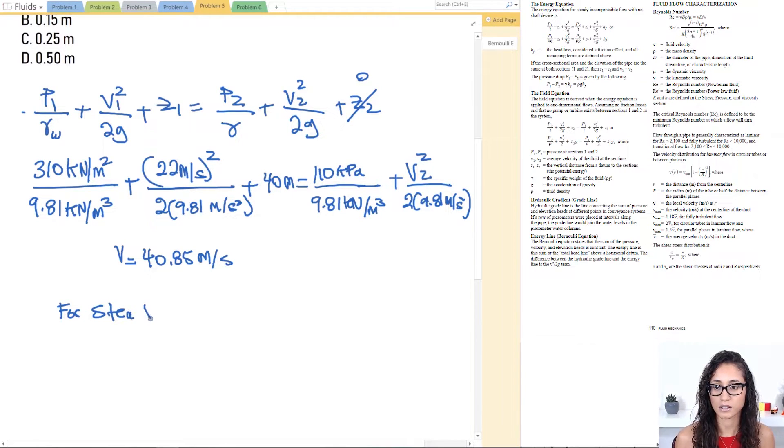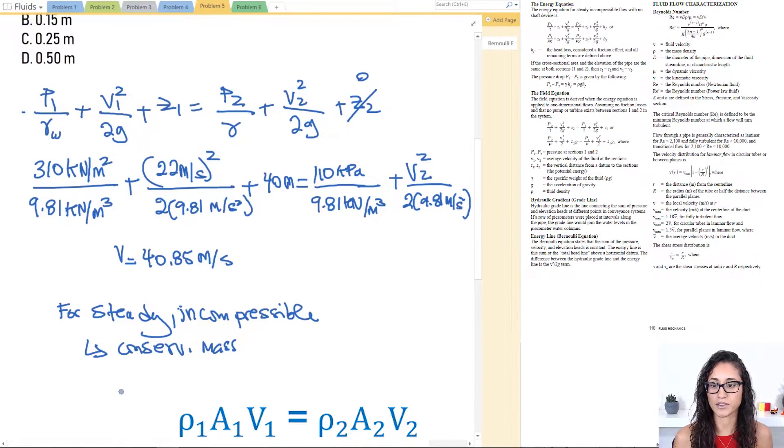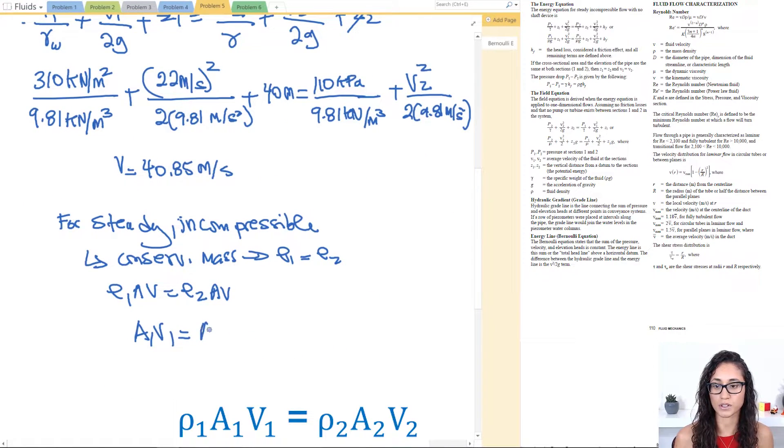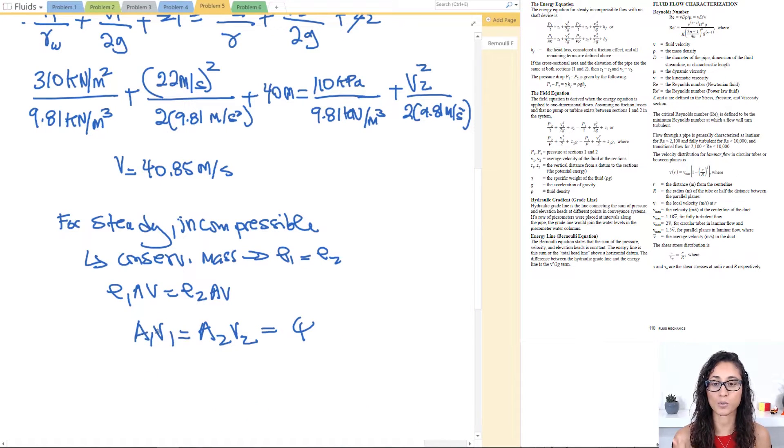For steady incompressible fluid, the conservation of mass gives us density 1 times AV equals density 2 times AV. Density 1 has to equal density 2, which means A1V1 equals A2V2 and this equals our flow rate and the flow rate is constant. We have A1, we have V1, we calculated V2. All we need to do is solve for A2 and then from there we can calculate the diameter.